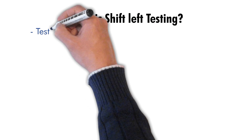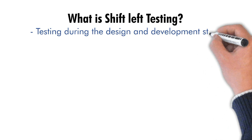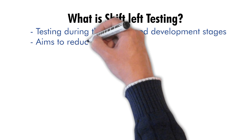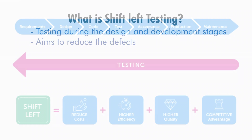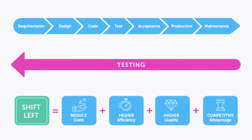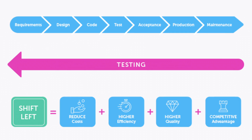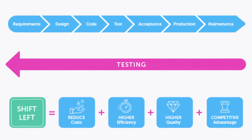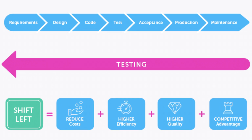What is shift left testing? Shift left testing is a testing approach that involves testing earlier in the software development life cycle, typically during the design and development stages. It aims to detect defects early in the development process, which reduces the cost and effort required to fix them.